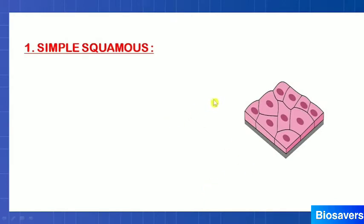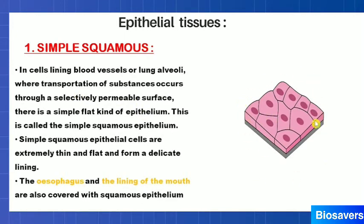The first type of epithelial tissue is simple squamous tissue. As the name suggests, it is the simplest type. These cells are flat and thin, with a single layer of cells lying over a basement membrane, which is non-cellular. They are selectively permeable in nature, meaning they allow only selective materials to pass through. Because of this structure, they are present in the esophagus and the lining of the mouth.